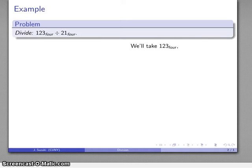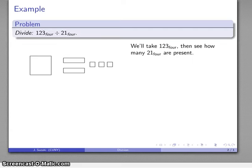And so my dividend is going to be 123 base 4 - one of the largest, two of the next largest, three of the smallest. There's one, two of these, three of those. And what I'm going to look for is how many 21 base fours are present - that's two of these and one of these.